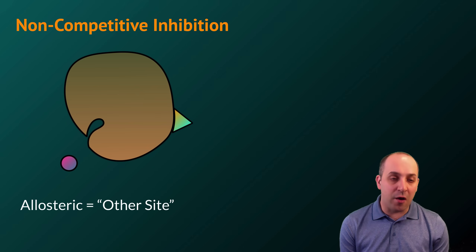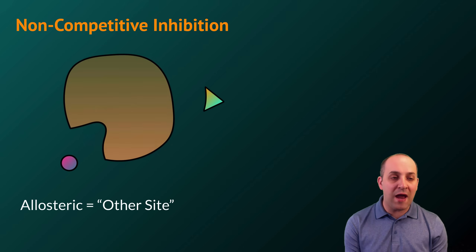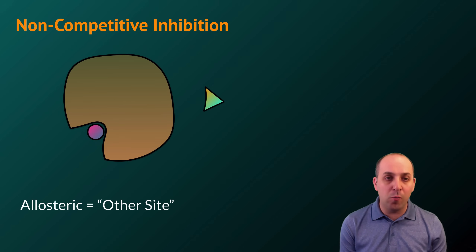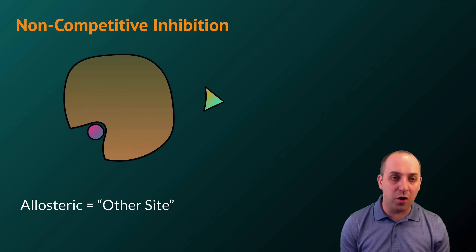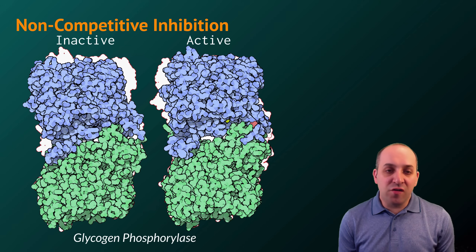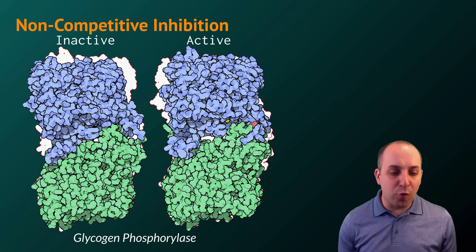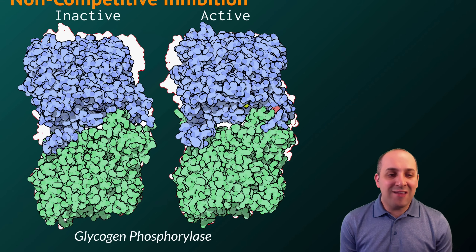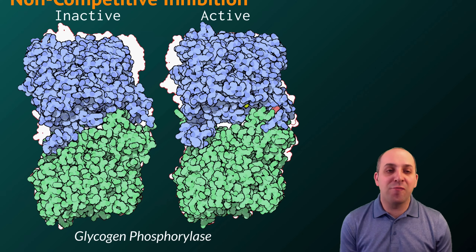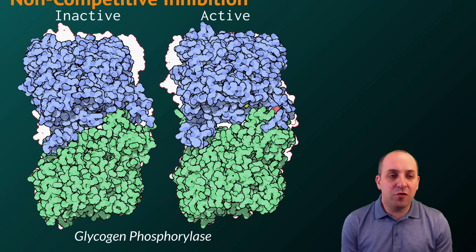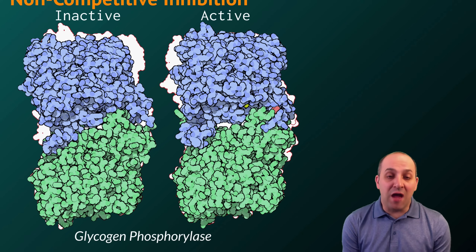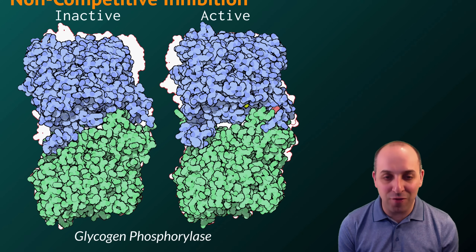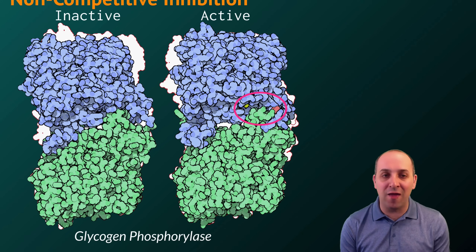Non-competitive inhibition is referred to as allosteric inhibition. When the allosteric inhibitor moves away, the active site resumes its functional conformation and catalysis can occur. Here you see two different forms of the enzyme glycogen phosphorylase, which participates in cellular respiration. The inactive version is shown on the left and the active version on the right, each mapped against an outline of the other to show the change in shape from the allosteric interaction. The active site is circled on the active form.